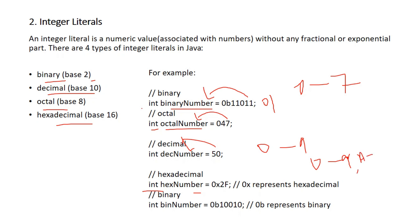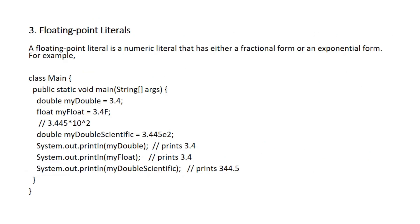Floating point literals are numeric literals that have a fractional form or an exponential form. For example, double myDouble = 3.4 and float myFloat = 3.4F. We use these to store floating point literals.